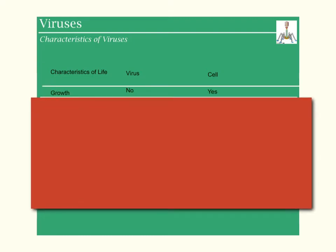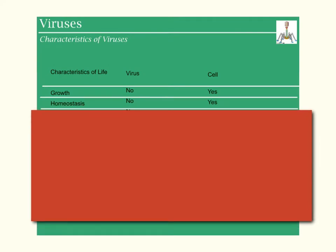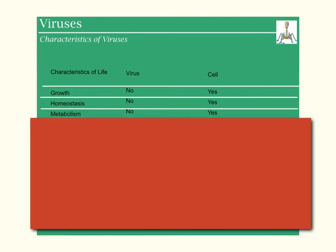Let's look at the first one: growth. Do viruses have the ability to grow? The answer is no, but cells do. Homeostasis, which essentially means stable internal environments — an example is body temperature at 98.6 degrees. Anything the body does to regulate that is considered homeostasis. Can a virus do that? No. Can a cell do that? Yes.